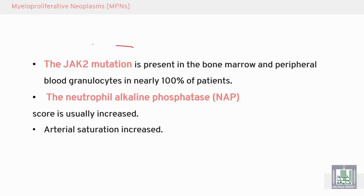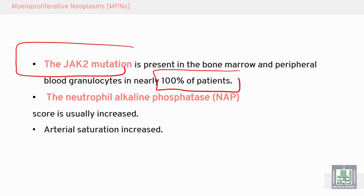The JAK2 mutation is present in 100% of patients with polycythemia vera, found in the bone marrow and peripheral blood granulocytes in addition to erythrocytes. Neutrophil alkaline phosphatase — the NAP score — is usually increased, in contrast to CML. Arterial oxygen saturation is also increased.